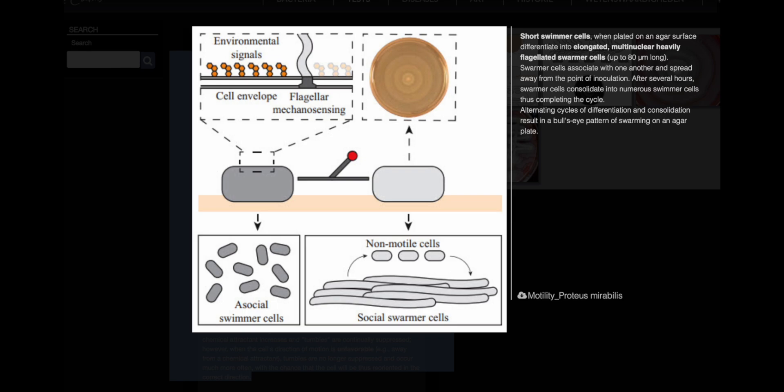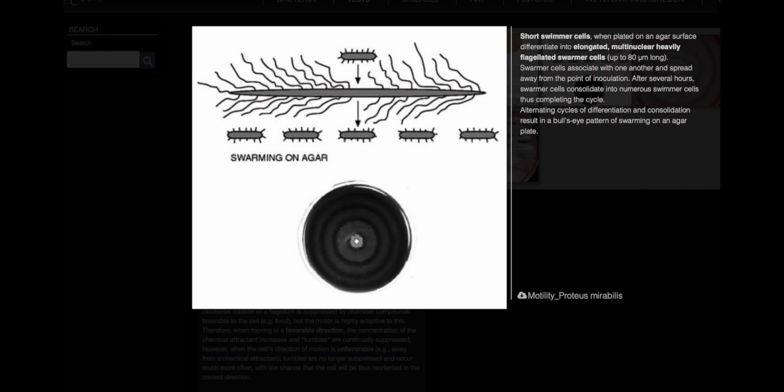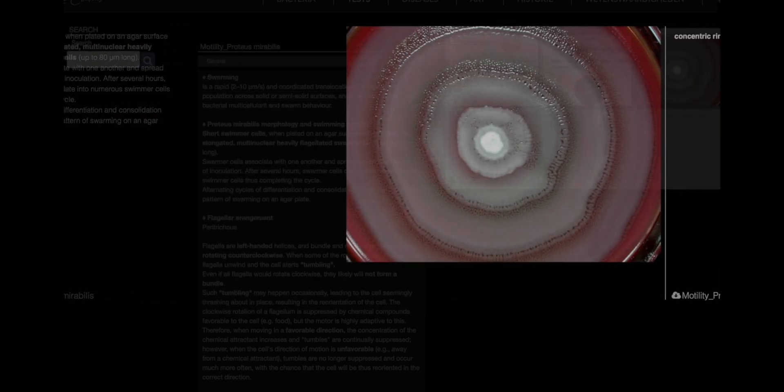The flagella are left-handed helices that bundle and rotate together only when rotating counterclockwise. When some of the flagella reverse direction and rotate clockwise, they unwind, causing the cell to tumble. Even if all flagella rotate clockwise, they are unlikely to form a bundle. This tumbling behavior allows the cell to reorient itself and change direction.